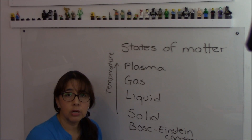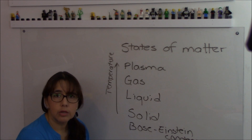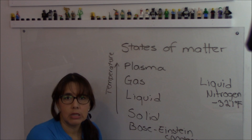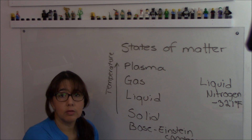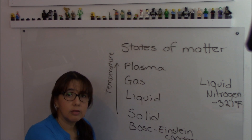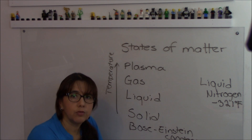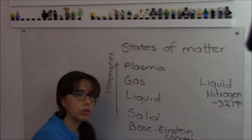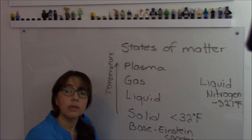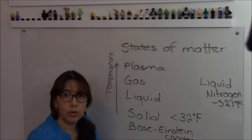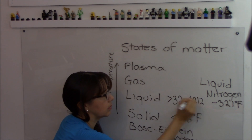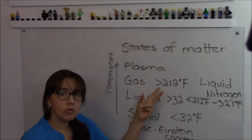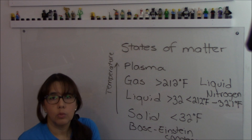Liquid nitrogen was at minus 321 degrees Fahrenheit. Bose-Einstein condensate occurs at very, very low temperatures, close to absolute zero. Absolute zero is zero Kelvin, which is minus 459 degrees Fahrenheit. For water: solid occurs below 32°F, liquid occurs above 32°F but below 212°F, and gas occurs above 212°F. Plasma can be thousands of degrees, or it can happen with high electric fields.